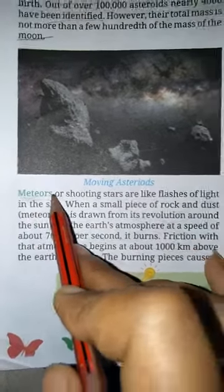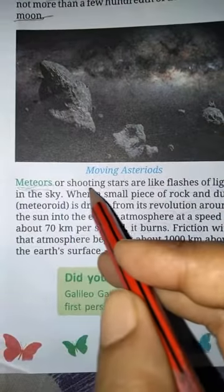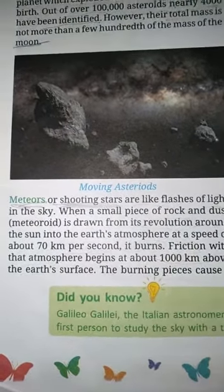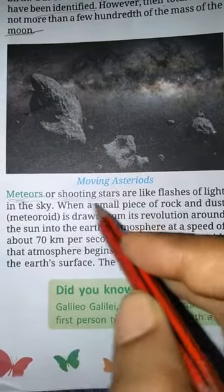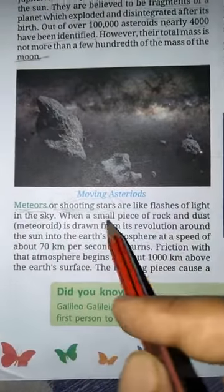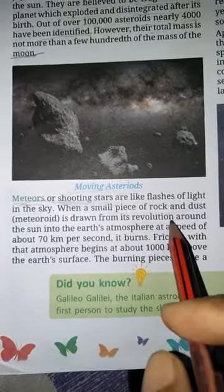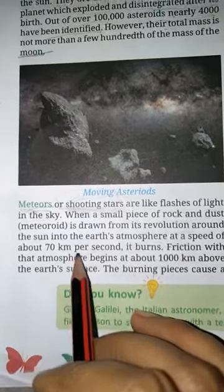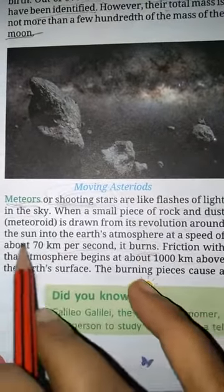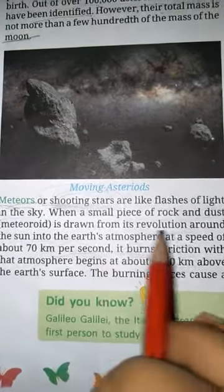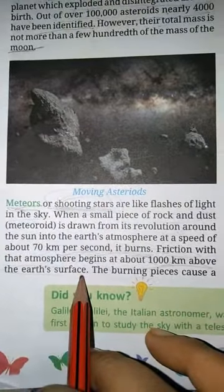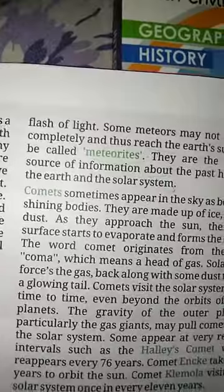Next is meteors. They are also called shooting stars. In Hindi, we can say 'Toopta Tara.' They are like flashes of light in the sky. When a small piece of rock and dust is drawn from its revolution around the sun into earth's atmosphere at a speed of about 70 km per second, it whirls. When it comes to the earth's atmosphere, it burns. Friction with the atmosphere begins at about 100 to 1000 km above the earth's surface. The burning pieces fall, creating a flash of light.